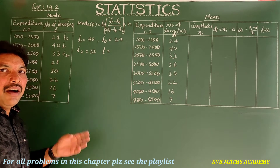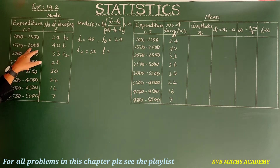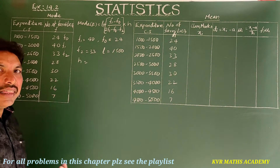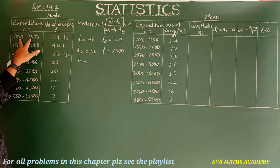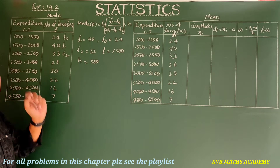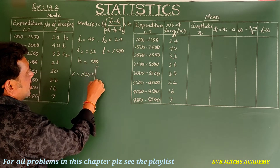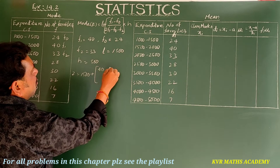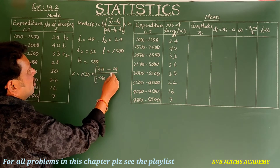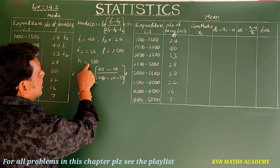l is the lower boundary of the modal class. The modal class corresponds to 1500–2000, so l = 1500. h is the size of the class interval — 1000 to 1500 is 500, so h = 500. Now substituting: Z = 1500 + [(40 − 24) / (2×40 − 24 − 33)] × 500.